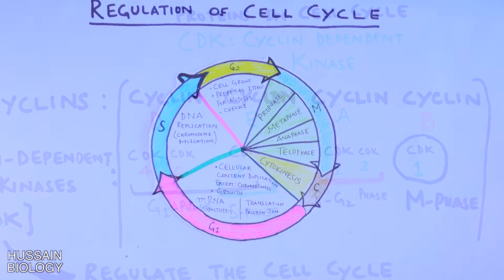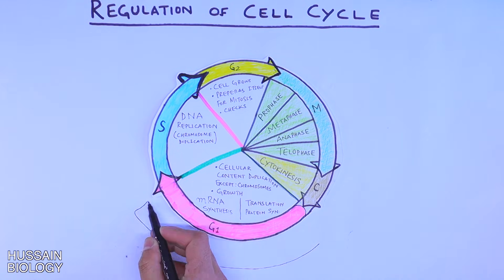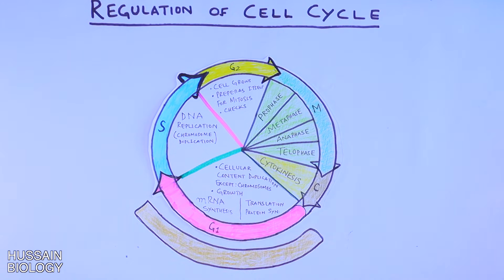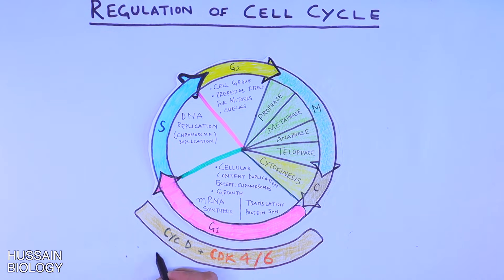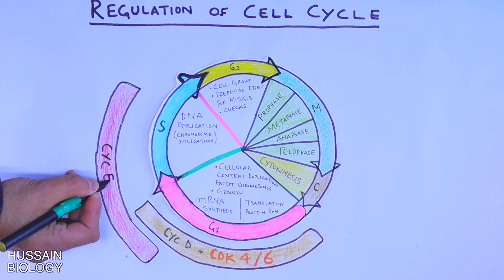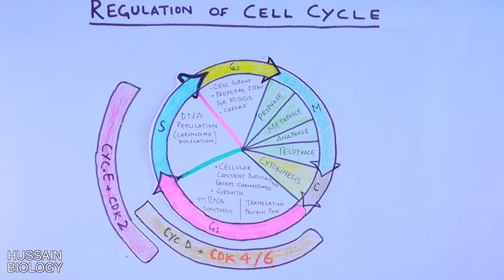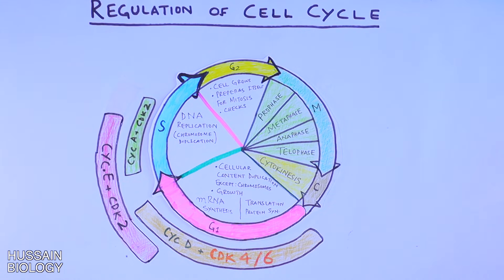In the diagrammatic representation, cyclin D interacts with CDK4 and CDK6 in the G1 phase. Then cyclin E interacts with CDK2, and this interaction exists at the end of G1 phase and into S phase. Furthermore, cyclin A interacts with CDK2, which is active in S phase and in the beginning of G2 phase.